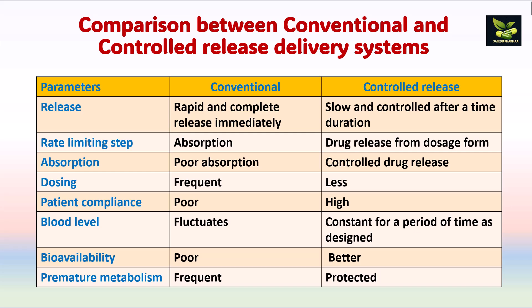Dosing frequency is high in conventional dosage forms and low in controlled release. Patient compliance is poor in conventional because the drug must be taken many times, but high in controlled release. Blood levels fluctuate in conventional dosage forms, but in controlled release the blood level is maintained constant for the designed period. Bioavailability — the amount and extent of drug reaching systemic circulation — is poor in conventional but better in controlled release. Premature metabolism is frequent in conventional dosage forms but is protected against in controlled release.